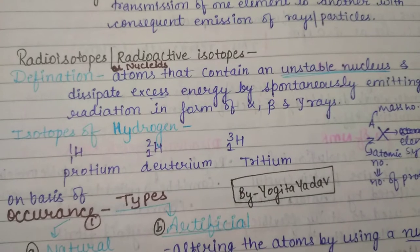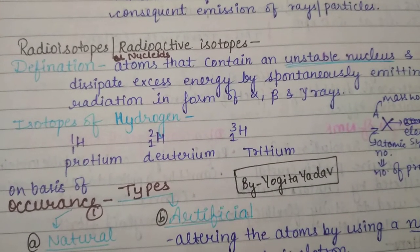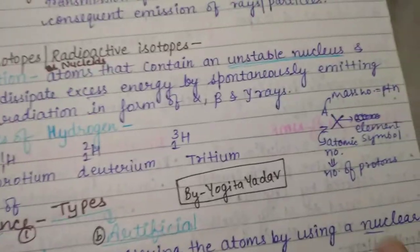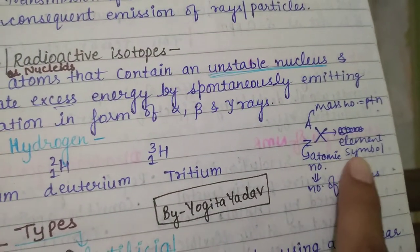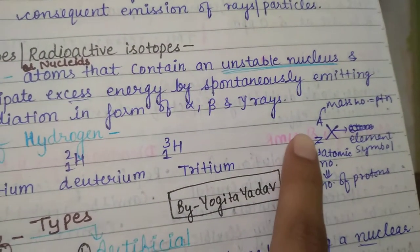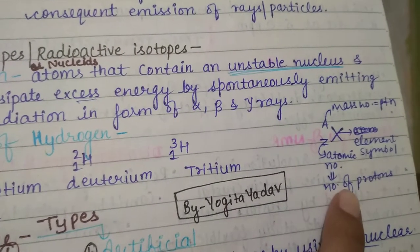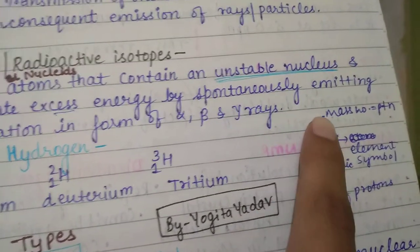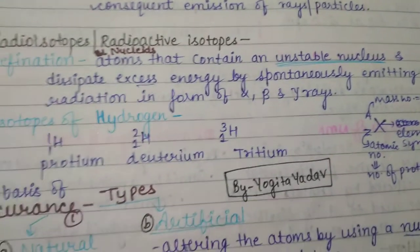Isotopes of hydrogen are protium, deuterium, and tritium. In the notation, X represents the element symbol, Z represents the atomic number — that is, the number of protons — and A represents the mass number, which is protons plus neutrons.